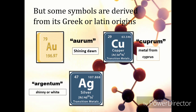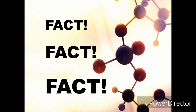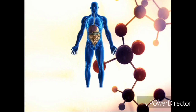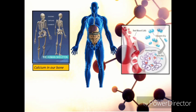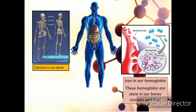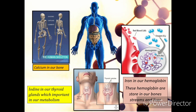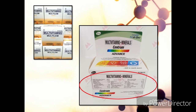Now, it's time for a fact! Did you know that you and I have element components inside our body, such as calcium in our bones, iron in our hemoglobin — which is stored in our bones, bloodstream, and liver — and iodine in our thyroid glands, which is important in our metabolism. These and more are the reason why these different elements are written in the labels of multivitamins.